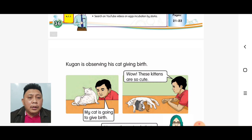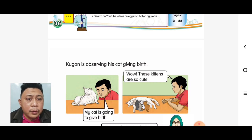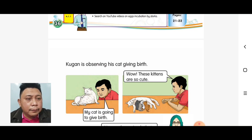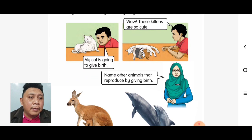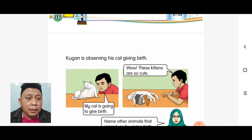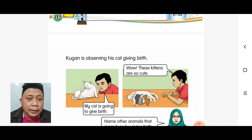Now look at this picture. Kugan is observing his cat giving birth. "My cat is going to give birth!" "Wow, these kittens are so cute!" The other way that animals reproduce is by giving birth — melahirkan anak.